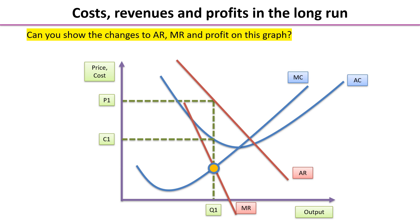Bearing in mind that process, how is this graph going to change? The graph on screen shows the short-run supernormal profit-making equilibrium in a monopolistically competitive market. Try sketching that graph as it stands, then change the average revenue and marginal revenue curves to show what happens to them and to profits when others enter the industry in the long run. Stop the video, sketch the graph, add new curves, and restart when you're ready.